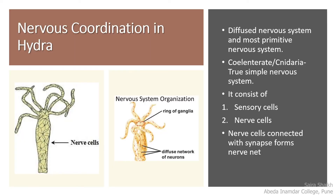Hydra has a diffuse type of nervous system. It is not centralized because organs like brain and spinal cord are absent. The diffuse nervous system of hydra is made up of two types of cells: sensory cells and nerve cells. Sensory cells are scattered throughout the body wall and tentacles, which are structures present around the mouth. In hydra, sensory organs are absent, so sensory cells function like sensory organs.